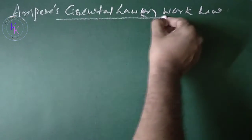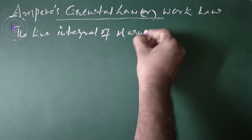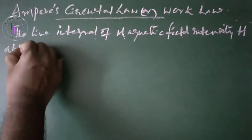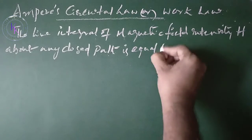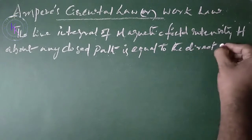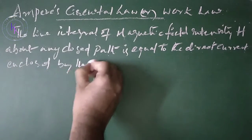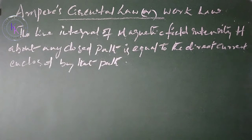Ampere's Circuit Law or Work Law states that the line integral of magnetic field intensity H about any closed path is equal to the direct current enclosed by the path.